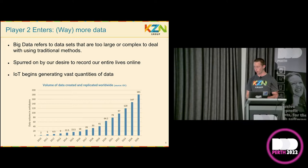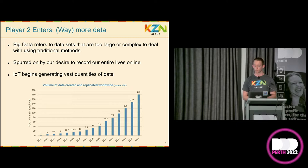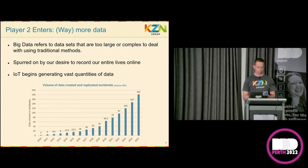We are on an exponential curve of data growth and the scale of our data sets is more important now than it ever has been. The problem? There were a few, including structure, which we'll talk about later. But the key point I'm going to focus on here is the pure volume. Traditional methods, like data warehouses, just could not scale or ingest data fast enough to keep up with the demand. And hence, big data — volumes of information too large to be dealt with using traditional methods.